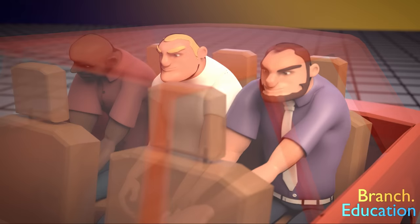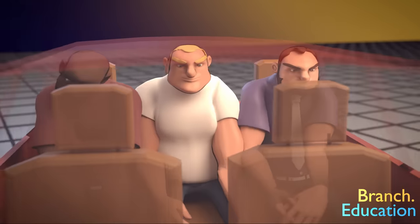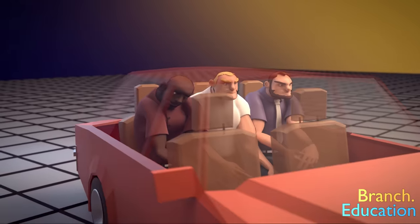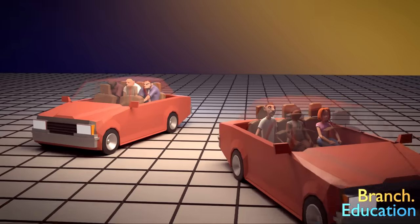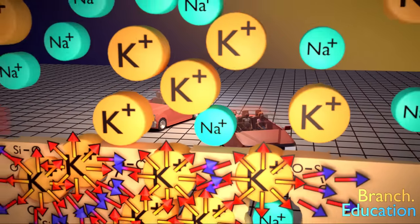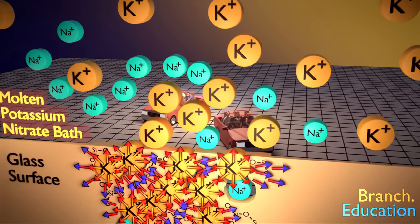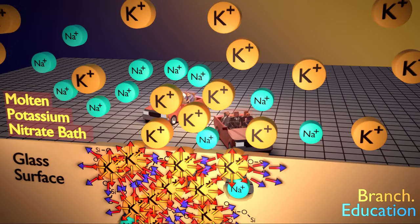Now replace those three people with three football linebackers. Those linebackers are just flat out stuck, unable to move. It would take much more force to move those linebackers from their seats. This is the fundamental concept behind what makes toughened glass special. The atoms are compressed, so it would take much more force for the glass to break.